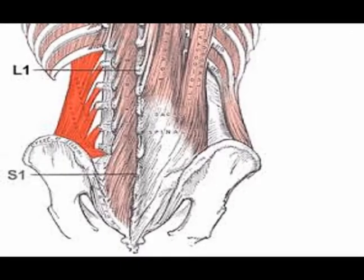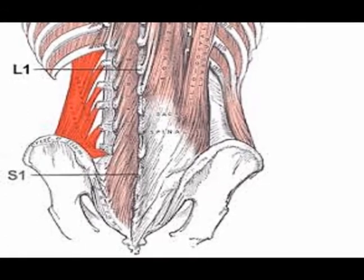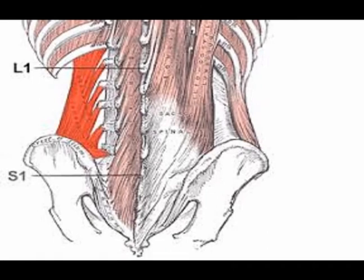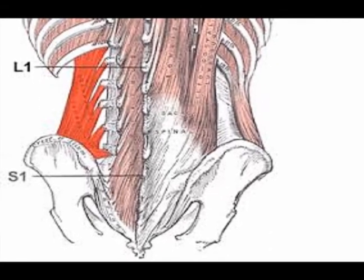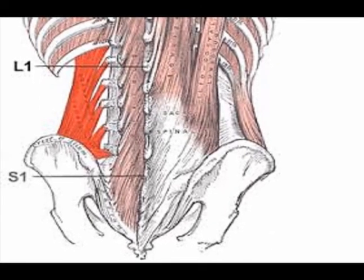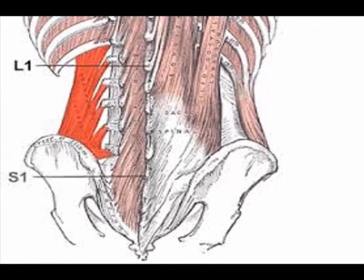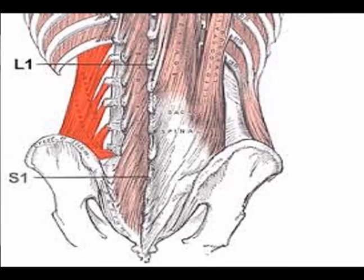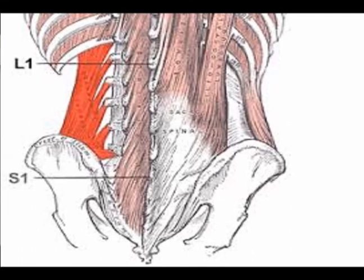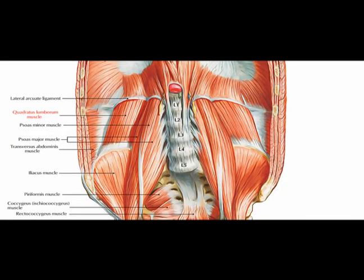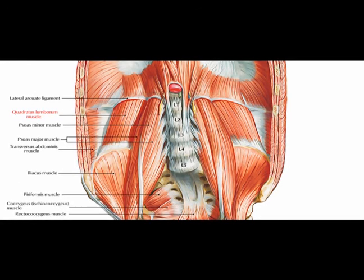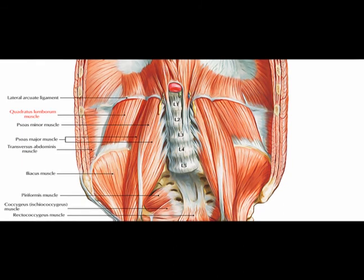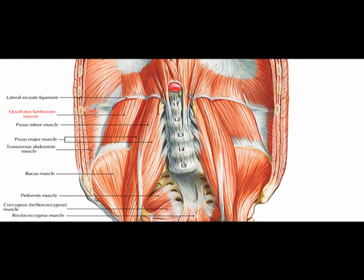Again, the quadratus lumborum muscle is often abbreviated to the QL. It originates on the internal lip of the iliac crest and also on the iliolumbar ligament. It inserts onto the 12th rib and onto the transverse processes of the lumbar vertebrae L1 through L5. Its concentric action when contracting bilaterally is lumbar extension and ribcage depression.